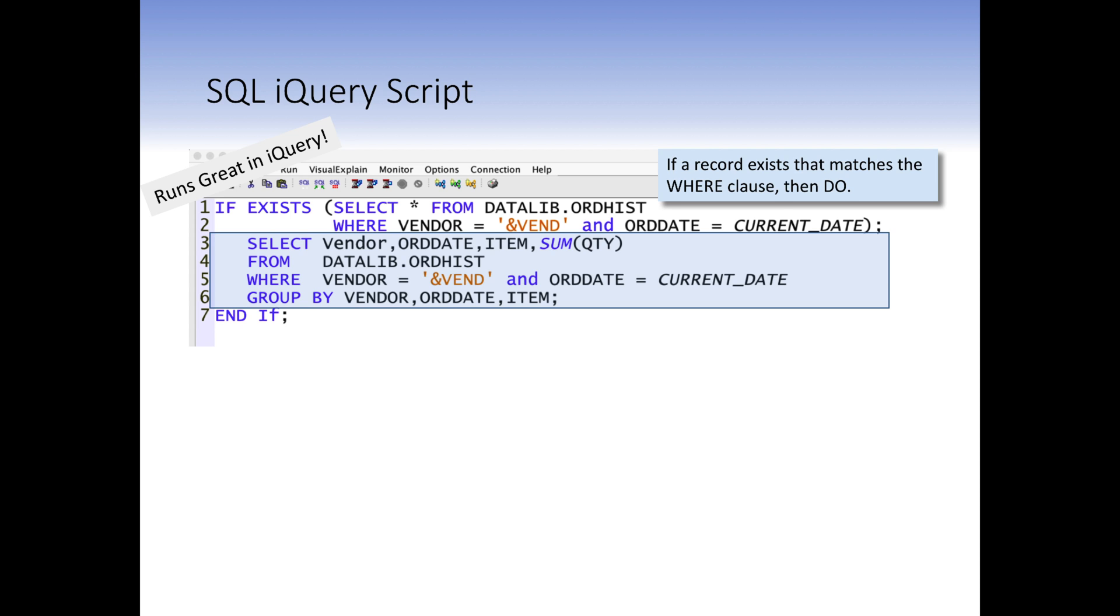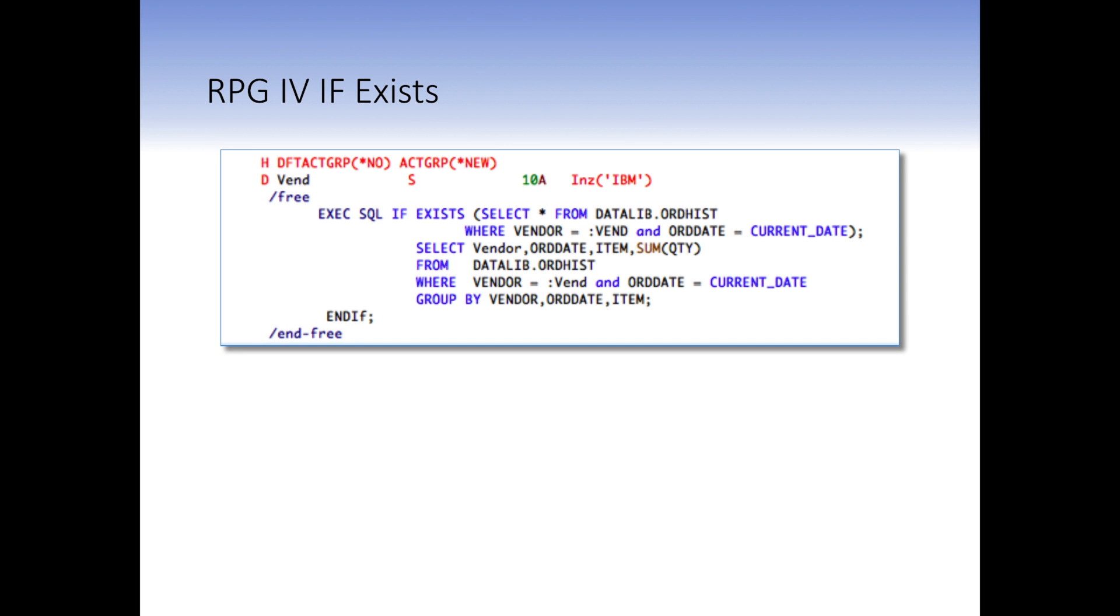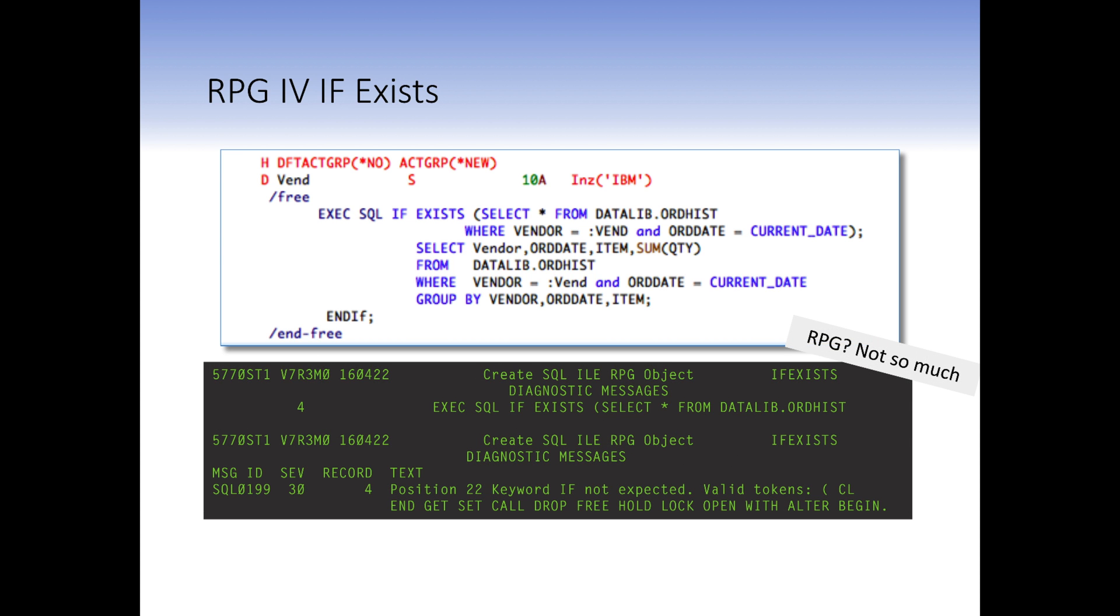But what about RPG? Let's try and run this in RPG. Here's an if exist statement in RPG. We've got the execute SQL if exists with the same sub-select as we had in the prior example and the same body of code that we're going to perform later on. The problem is when we try and compile this, RPG is not going to support this. It gives us a syntax error, position 22, keyword if is not expected. It doesn't like the if statement. There's no way to implement this directly in RPG.